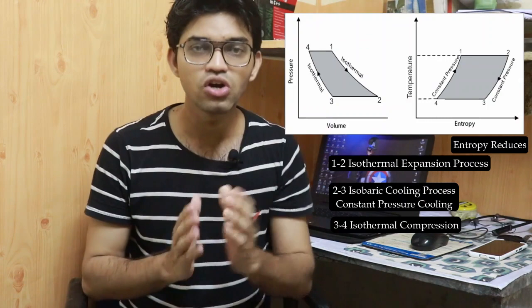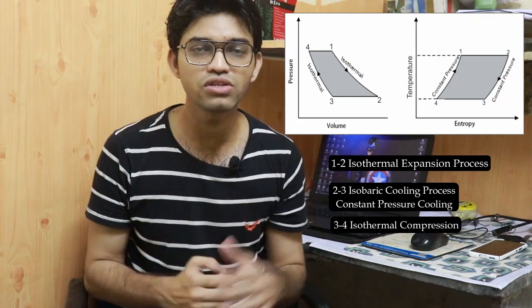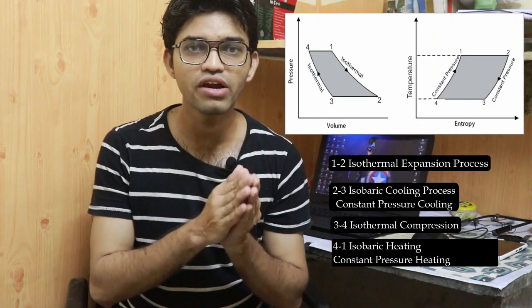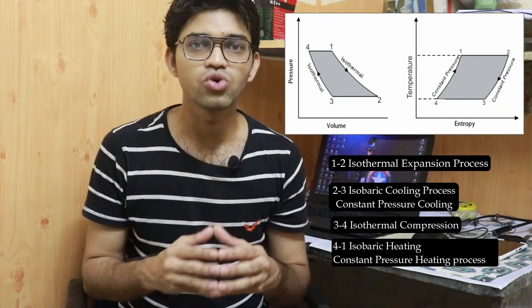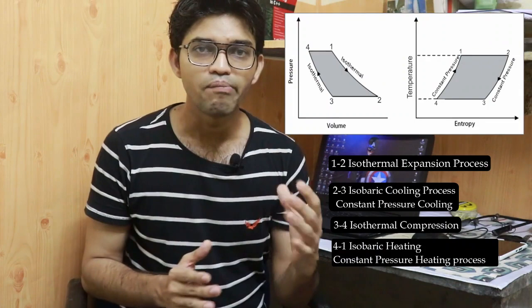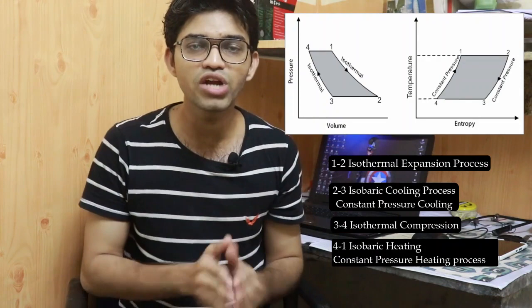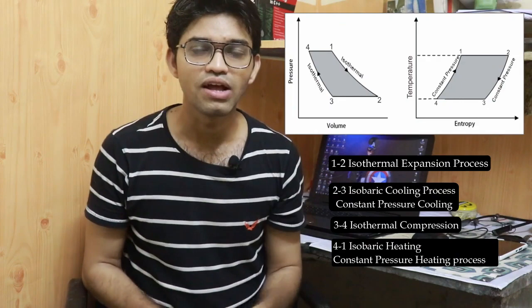Process 4 to 1 is the constant pressure heating process. Ignition occurs at constant pressure, and on the TS diagram the temperature rises while pressure remains constant. These are the four thermodynamic processes of the Ericsson cycle: isothermal expansion, constant pressure cooling, isothermal compression, and constant pressure heating.